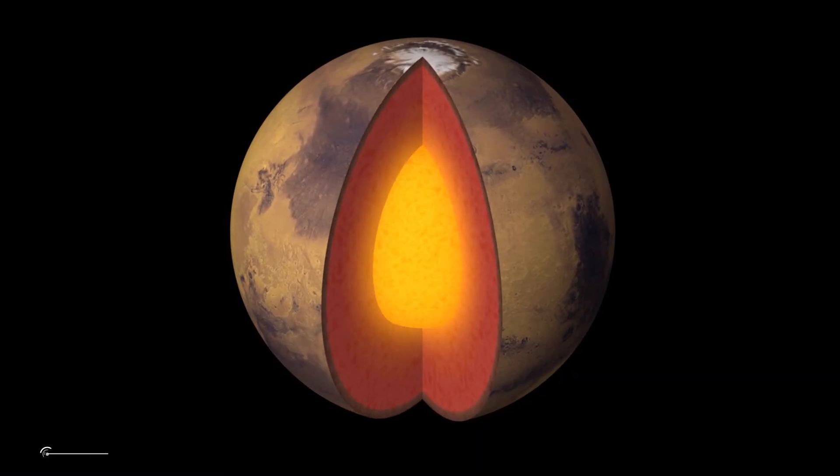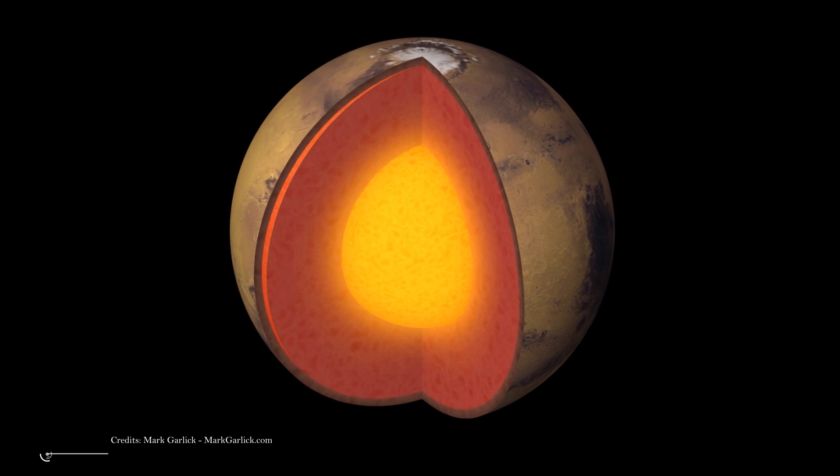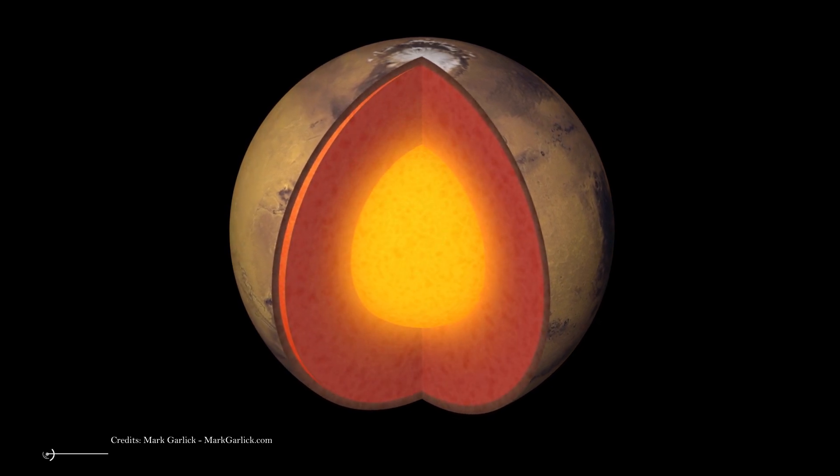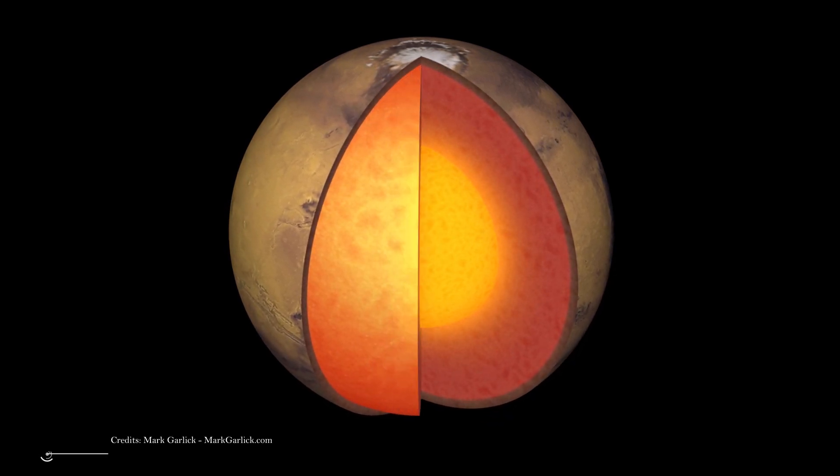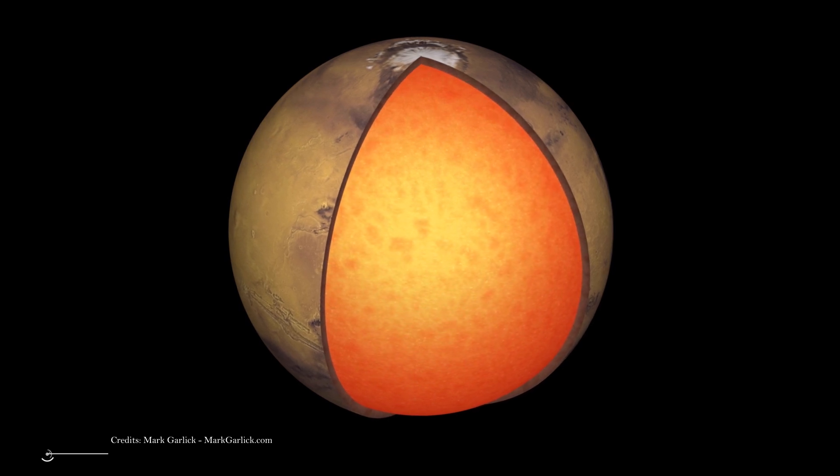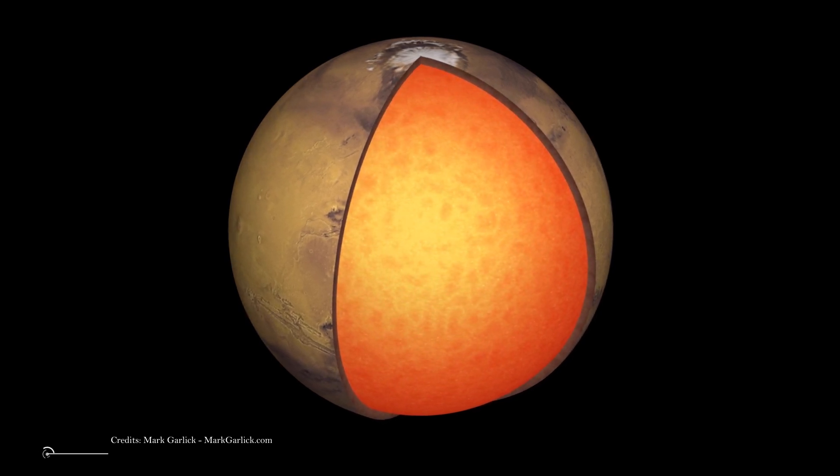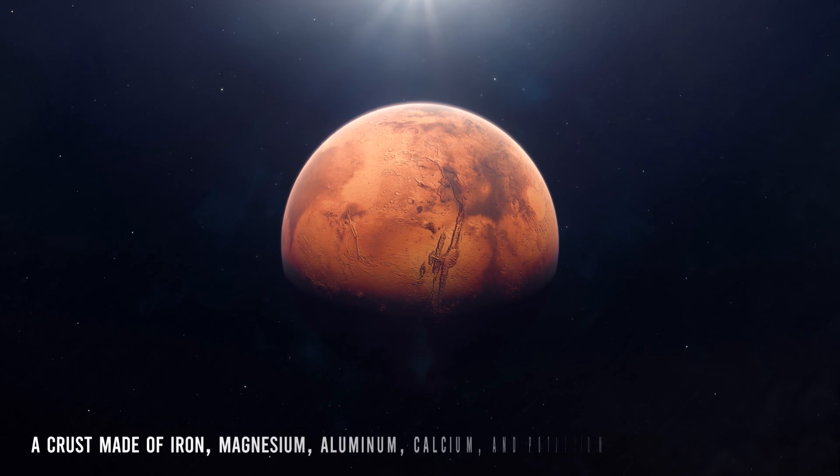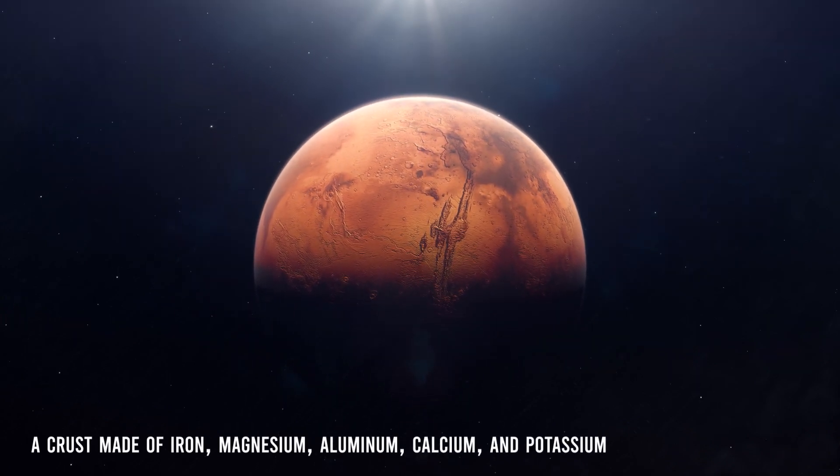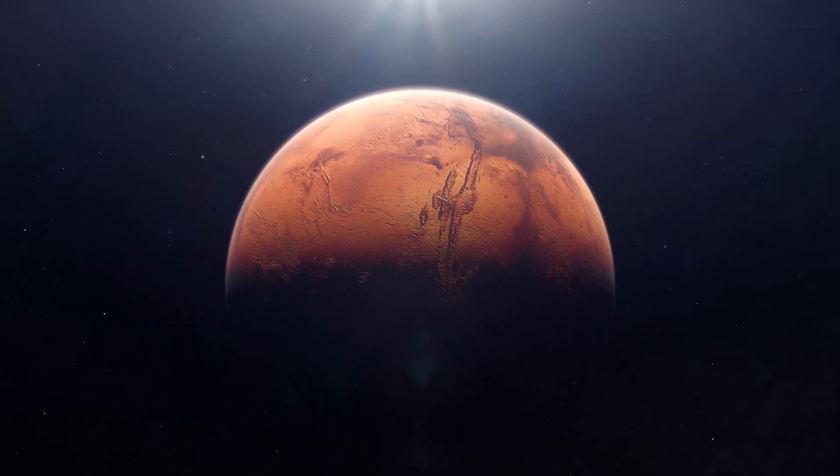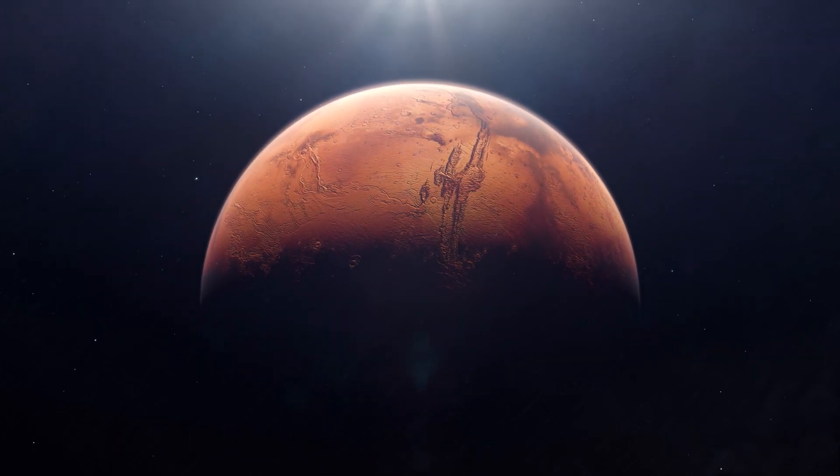Last but not least, Mars has a dense core at its center between 930 and 1,300 miles in radius. It's made of iron, nickel, and sulfur. Surrounding the core is a rocky mantle between 770 and 1,170 miles, 1,240 to 1,880 km thick. And above that, a crust made of iron, magnesium, aluminum, calcium, and potassium. This crust is between 6 and 30 miles, 10 to 50 km deep.